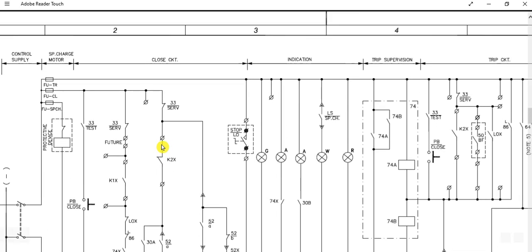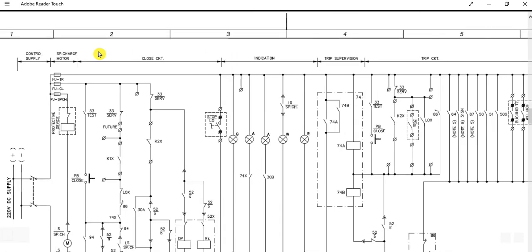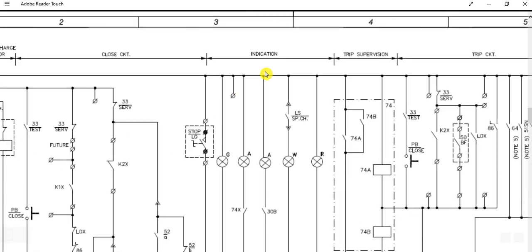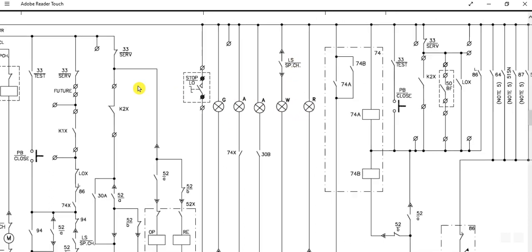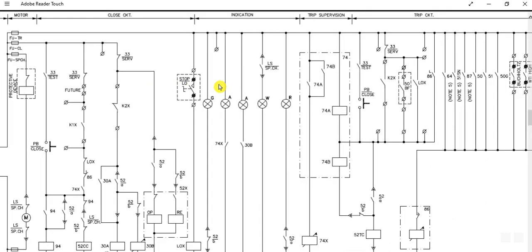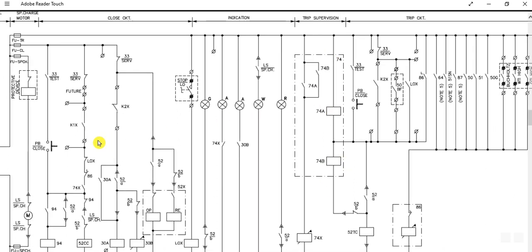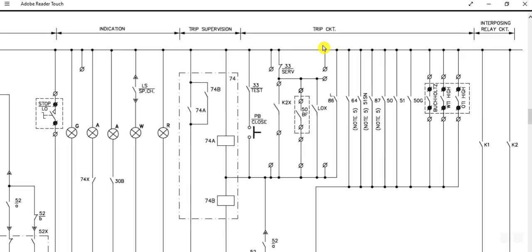This is the indication circuit — circuit breaker on, off, and trip indication, limit switch, spring charge limit switch, and spring charge status. This is also the trip circuit supervision relay 74, and the 74 contact multiplication relay. This side is the trip circuit.